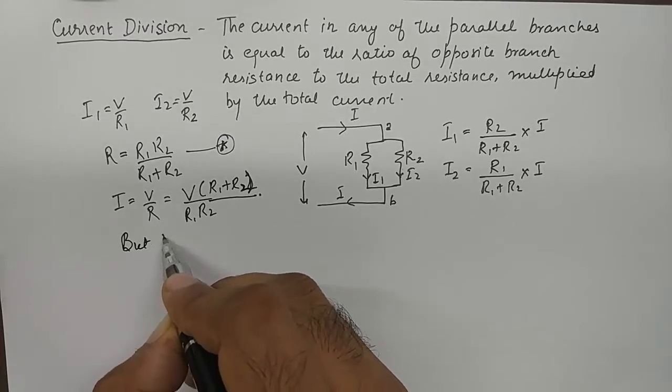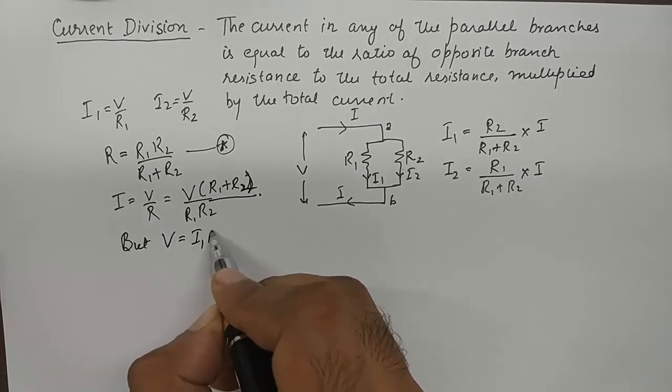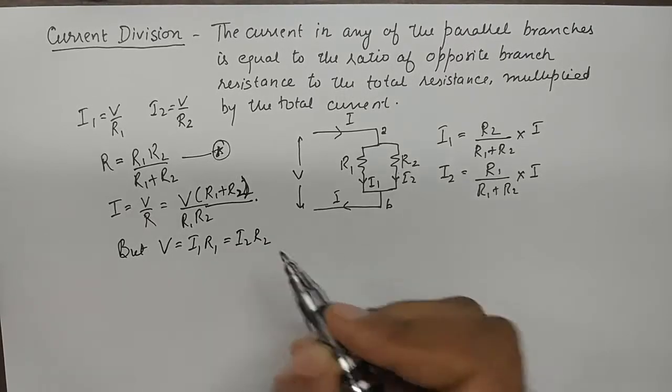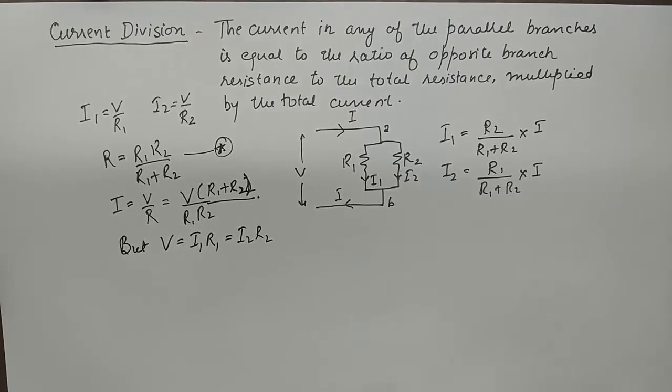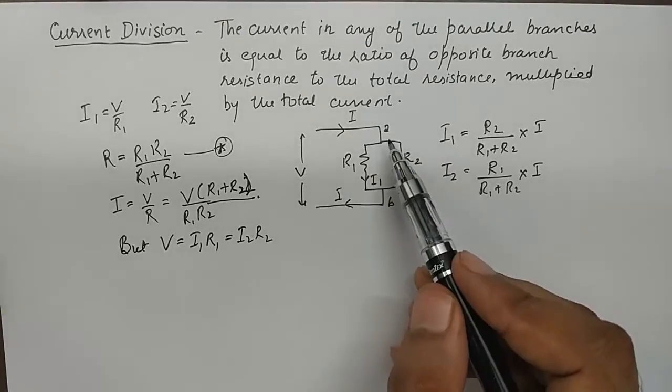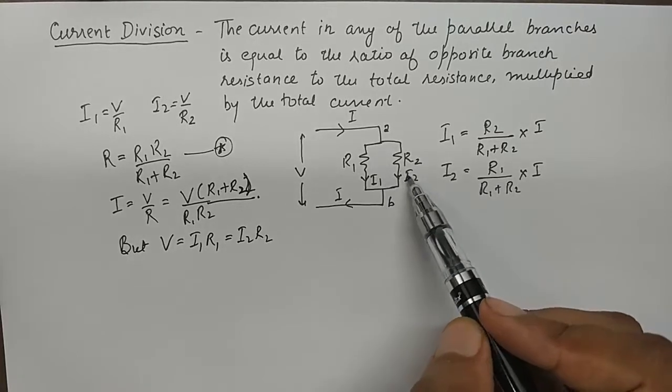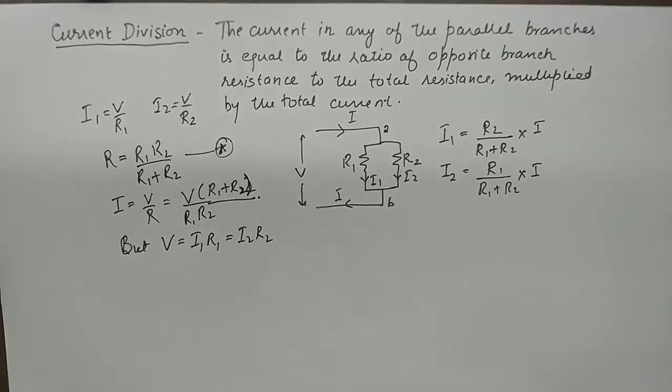But we know that V equals I1 R1 and also equals I2 R2. So voltage is equivalent to the product of current into resistance in each branch.